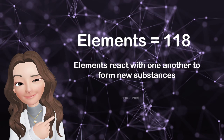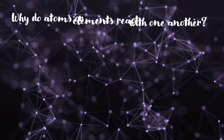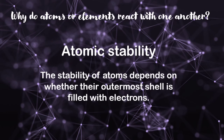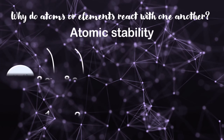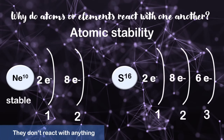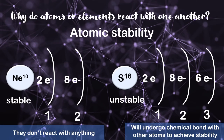These new substances are called compounds, which are totally different in terms of physical and chemical aspects from the original atoms or elements they come from. The question is: why do atoms or elements react with one another? That is because atoms need to become stable, or what we call atomic stability. The stability of atoms depends on whether the outermost shell is filled with electrons. If the outer shell is filled with 8 electrons, or if the valence electron count is 8, then it is considered stable. Atoms with an unfilled outer shell are unstable, and they will usually form chemical bonds with other atoms to achieve stability.